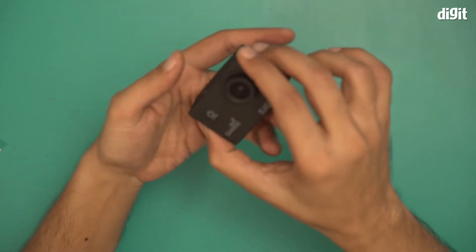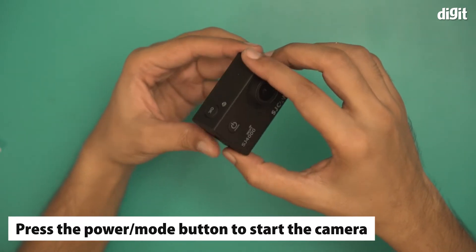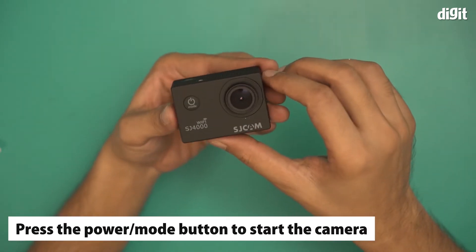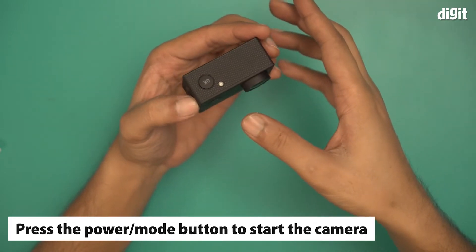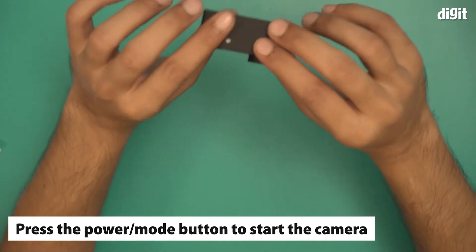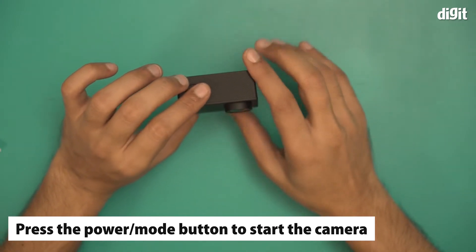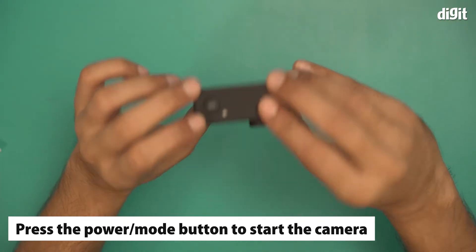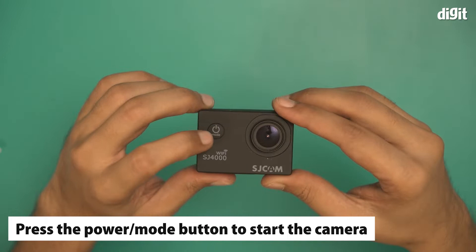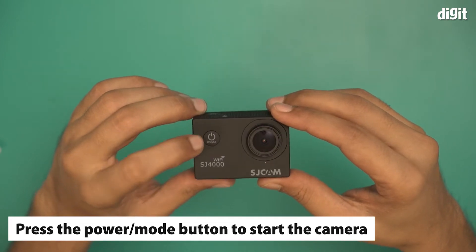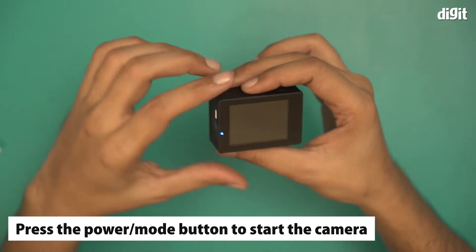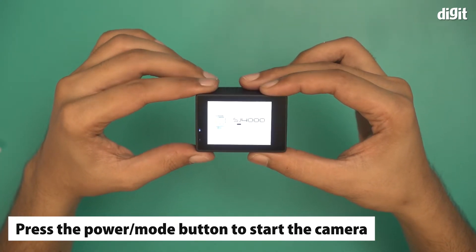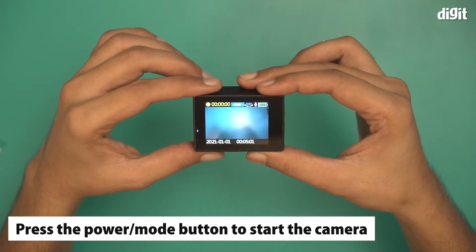First, you have to start the camera. Most of these action cameras have more than one power button so you can press record from whichever angle is convenient. Generally, the idea is that you fix it on top of a moving object and let it roll. I'm going to turn it on using this power button. It's written power and mode here. The moment I do that, I got a display saying SJ4000, as you can see.